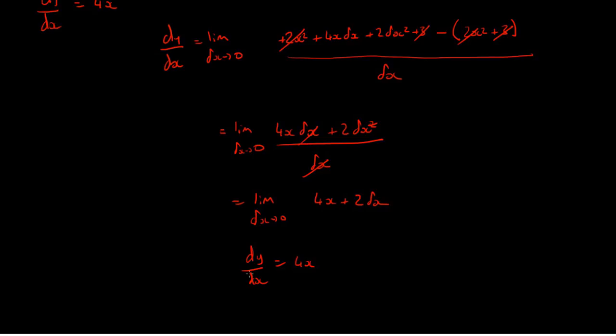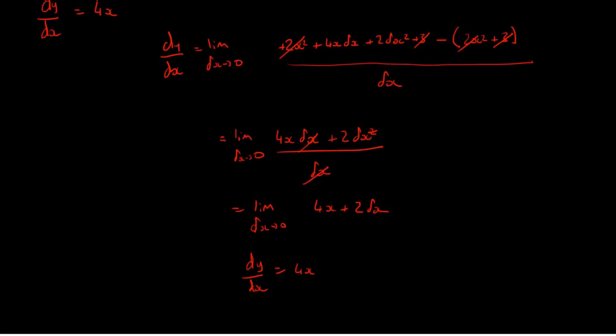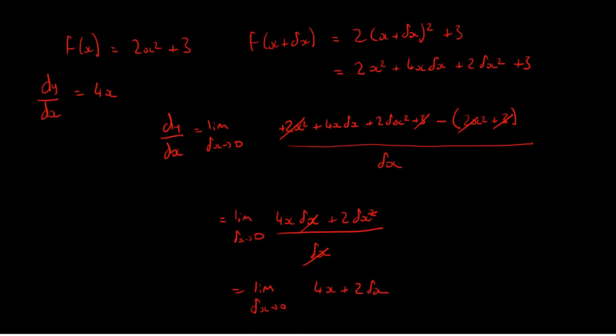So, therefore, we can say that dy by dx is just 4x. And that was an example of using differentiation from first principles to find the gradient of a curve, not just applying a standard rule.